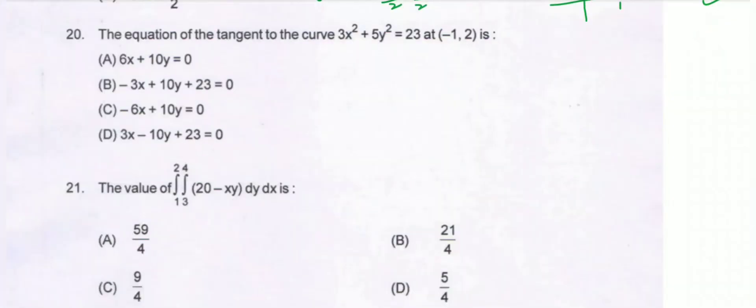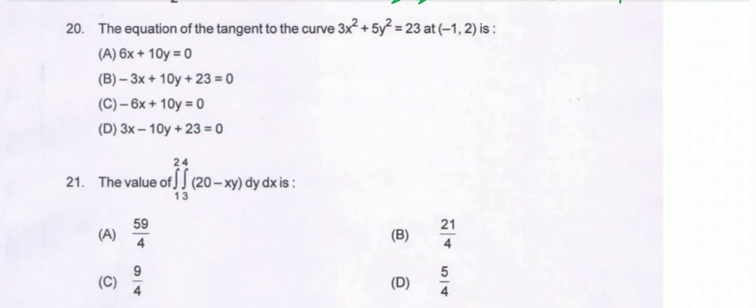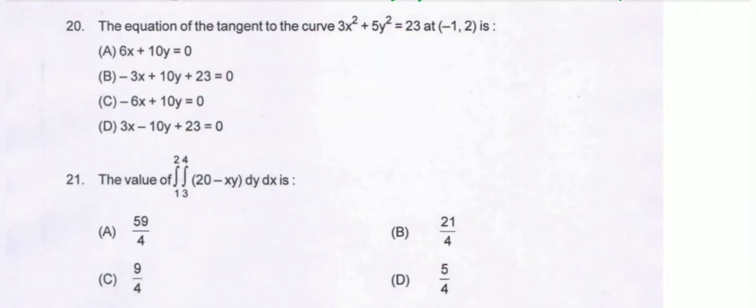Question number 20. The equation of the tangent to the curve 3x²+5y²=23 at the point (-1, 2).